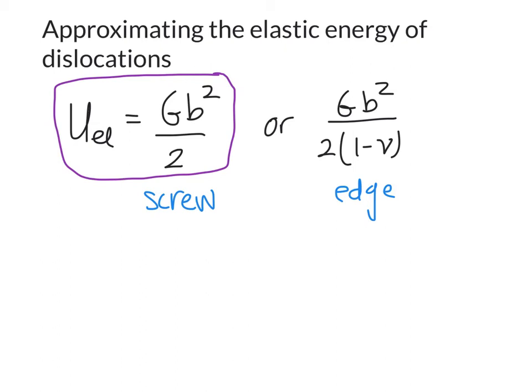Now obviously, we've made an assumption here about what the dislocation spacing is and therefore the dislocation density. And this approximation is essentially for an annealed material where the dislocation density is not very high. If the dislocation density were higher, then the elastic energy contributed by dislocations would also be a fair amount higher. Let's take a look at an example now, just so that we can see the magnitude of what this energy might be.